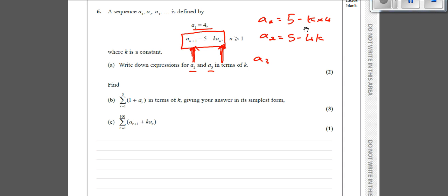Now using exactly the same premise there, a3 equals 5, so it's going to be 5 take away k times the previous term. And the previous term was a2, which we've just worked out. That's 5 minus 4k.